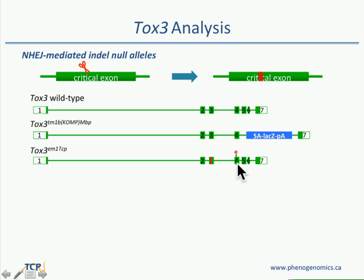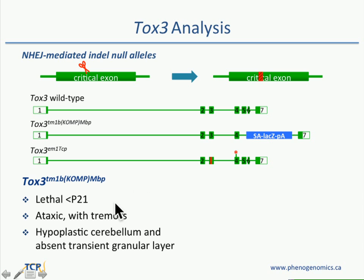When we looked at the phenotype of these mice in our IMPC screen, we found that homozygous TOX3 mutants were lethal before 21 days of age, before weaning, and they presented with severe ataxia and tremors. These mice have a lot of trouble moving. It does get progressively worse, so they reach endpoint because once they're weaned they cannot feed. When we did immunohistochemistry on brain sections, we found they had a hypoplastic cerebellum and an absent transient granular layer.